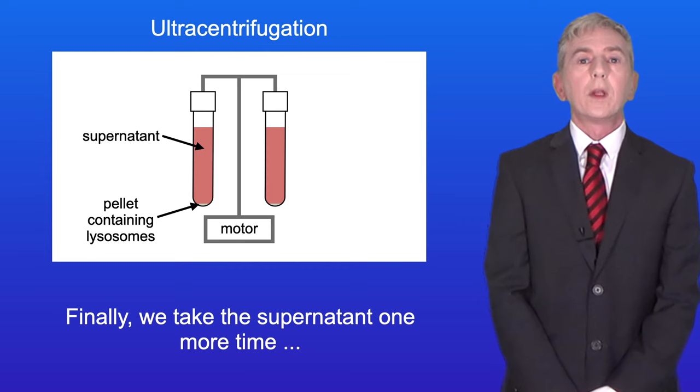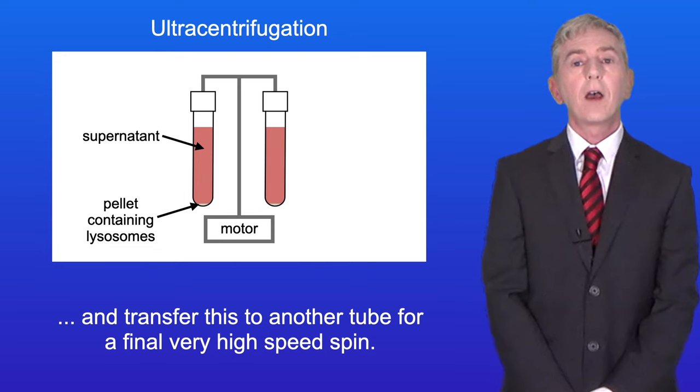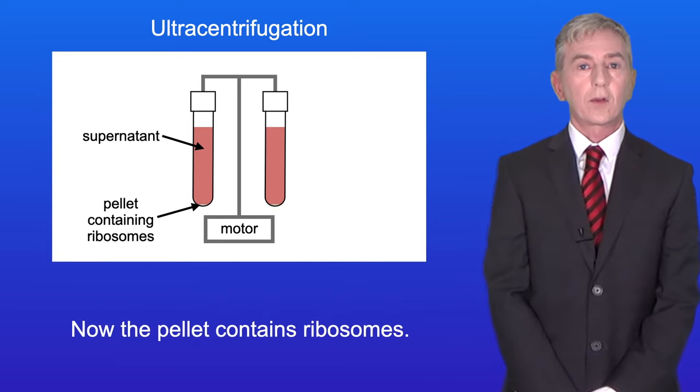Finally we take the supernatant one more time and transfer this to another tube for a final very high speed spin. Now the pellet contains ribosomes.